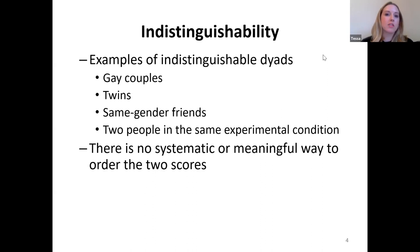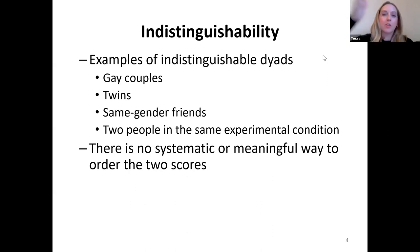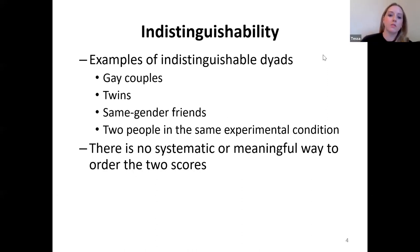Indistinguishable dyads are those where the two partners can't be distinguished based on a meaningful variable. For example, if you're studying gay couples — all men — it's arbitrary who you'd label as partner one and partner two. Similarly, twin studies looking at identical twins, same-gender friends, or studies where both dyad members are in the exact same experimental condition would be indistinguishable. In that case, there's no systematic or meaningful way to order the two scores.